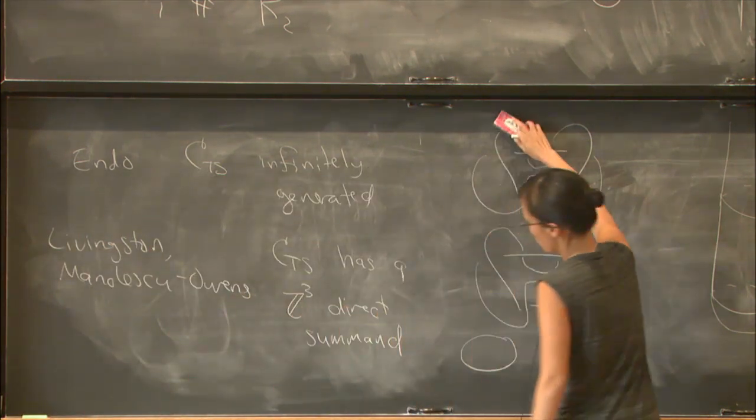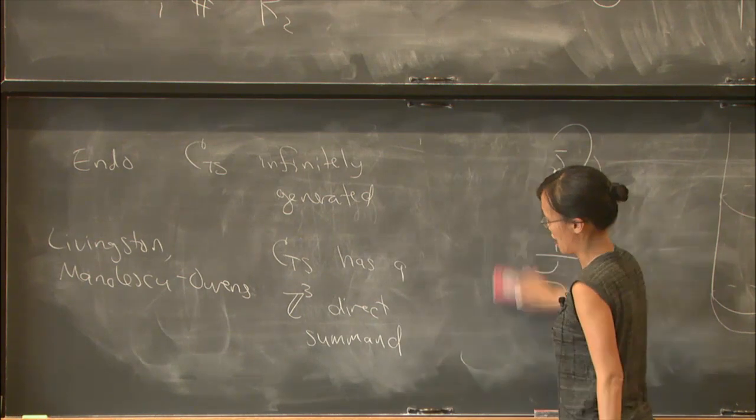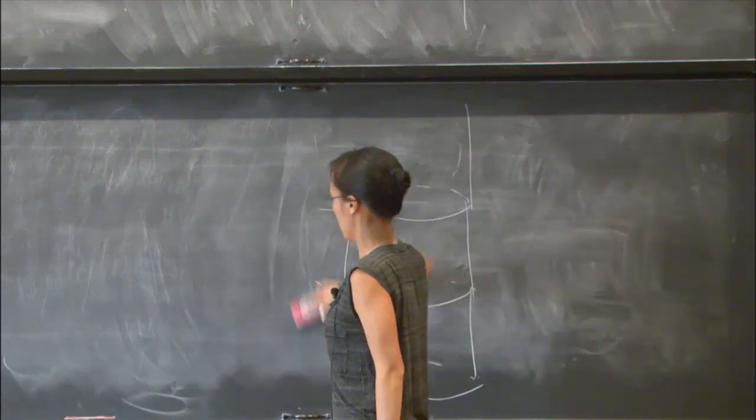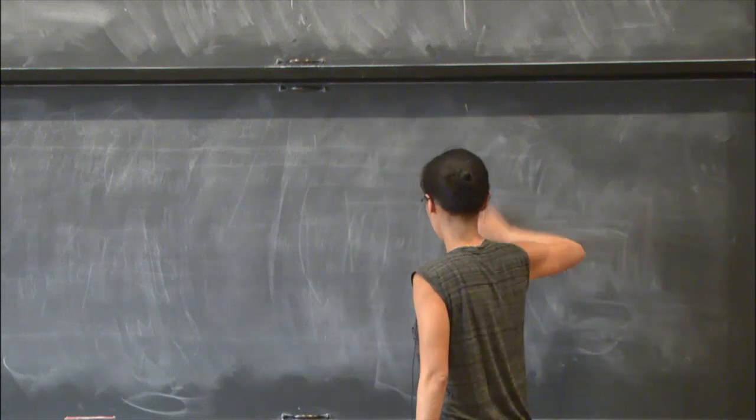They showed that this subgroup has a Z³ direct summand. Okay, well, so we have something that's infinitely generated and has a Z³ direct summand. The natural question is: does it have an infinite rank direct summand?